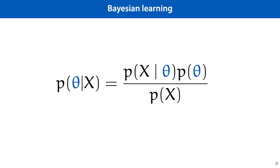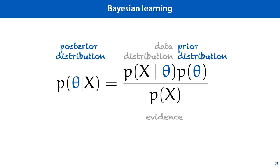And the elements of this equation have the following names. The probability that we are interested in is called the posterior distribution. And the probability of the data given the model parameters theta is called the data distribution. This is what in frequentist learning is called the likelihood.